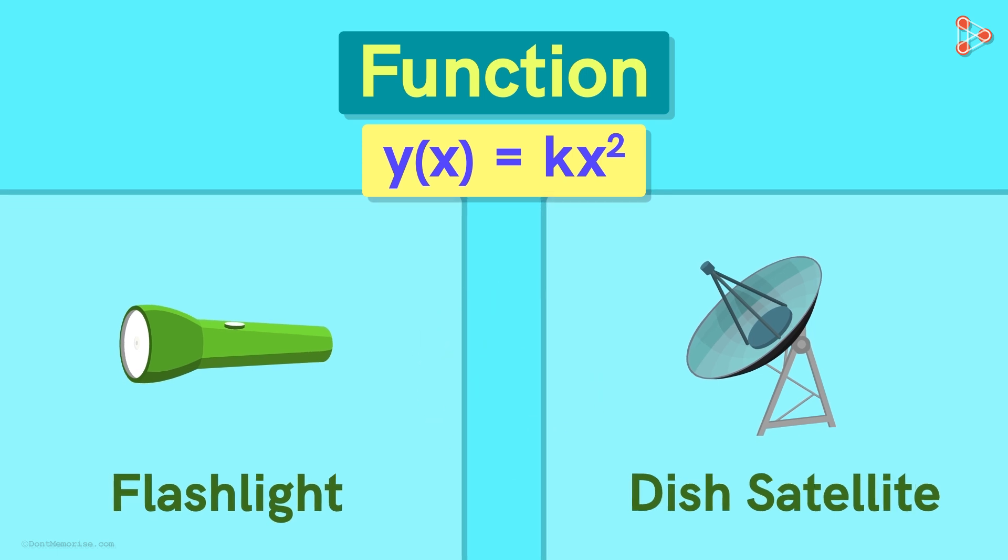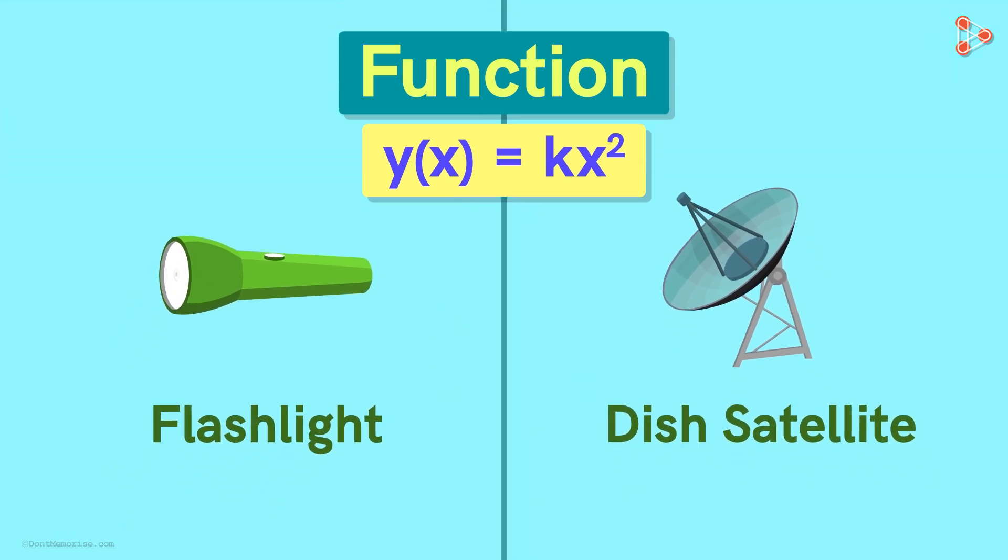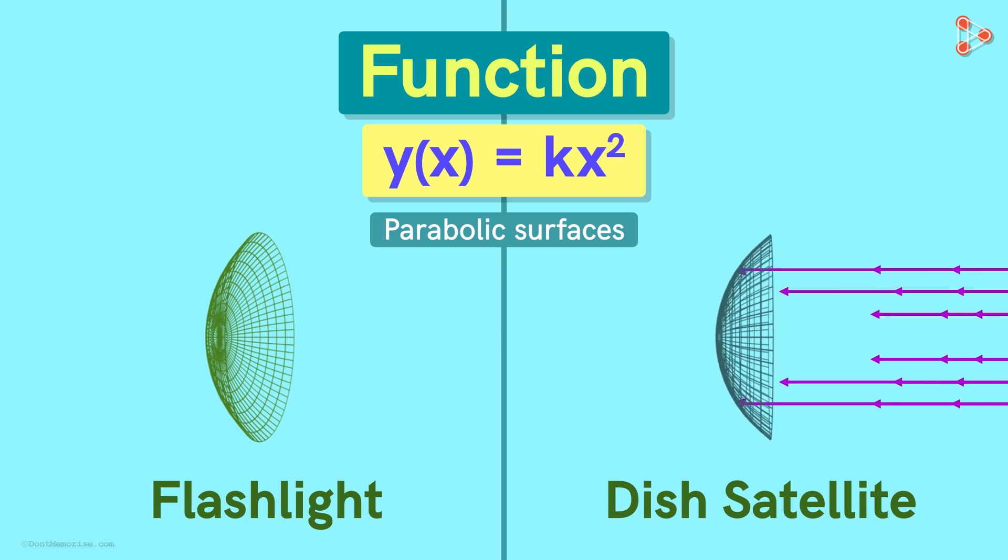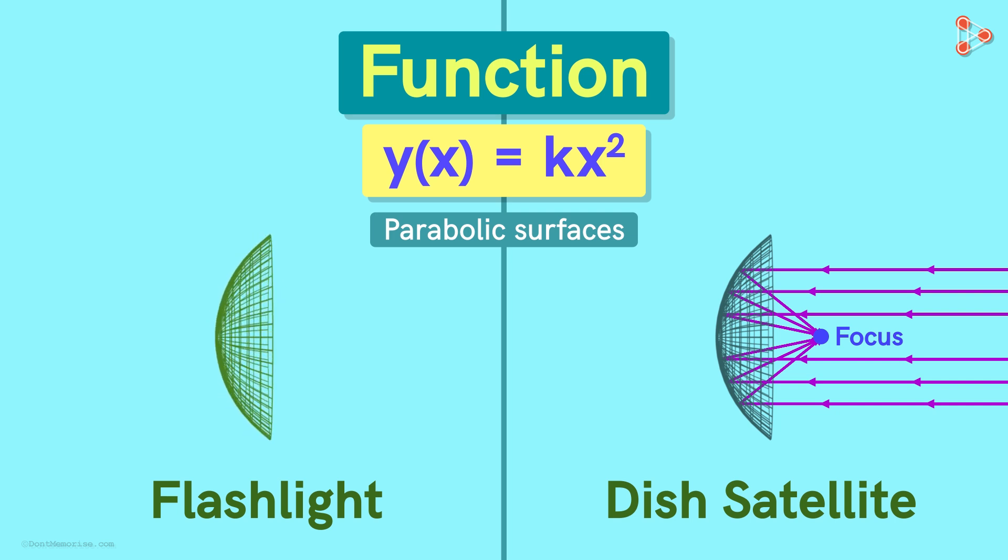The mirror in this flashlight and this dish are similar curved surfaces called parabolic surfaces. The special thing about such surfaces is that in the case of a satellite, all the electric signals falling on the dish get reflected to this point called the focus. And in the case of flashlight, it is the opposite. The bulb inside is located at the focus point. When we turn it on, all the light rays instead of spreading in all directions, get reflected in the forward direction.